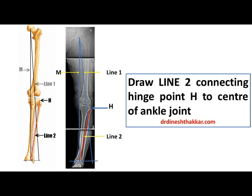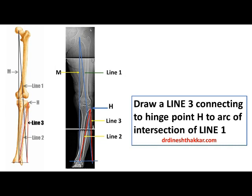Now draw Line 2 connecting the hinge point H to the center of the ankle joint. Then draw Line 3 connecting the hinge point H to the arc of intersection of Line 1 with the line parallel to the ankle joint.